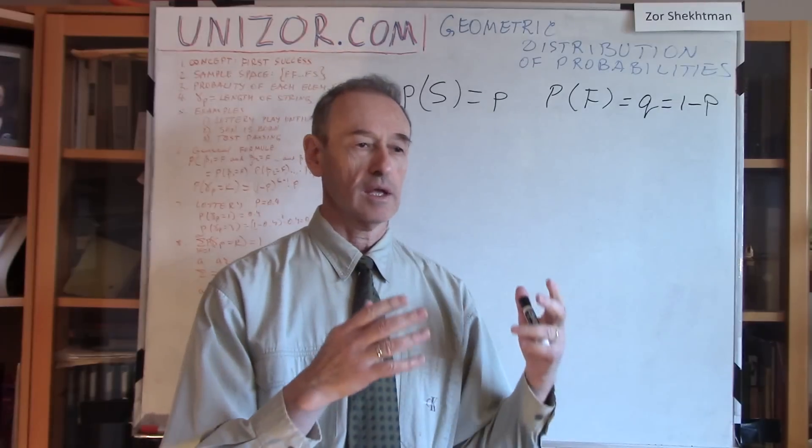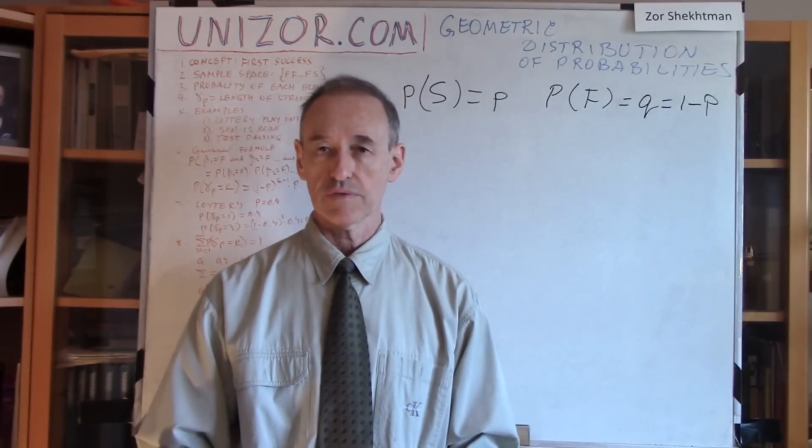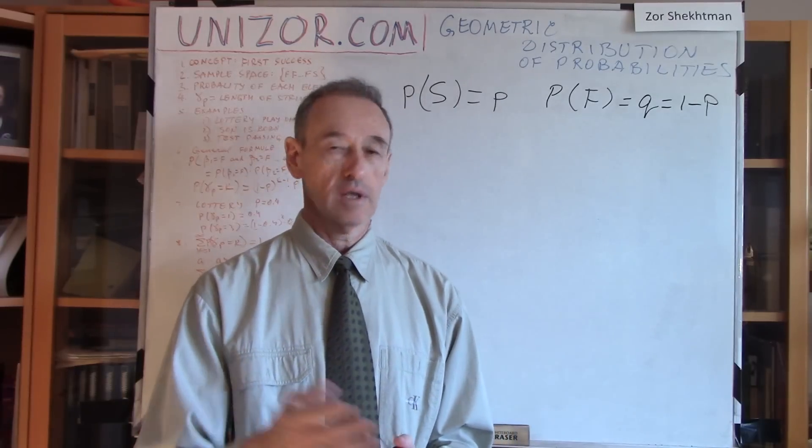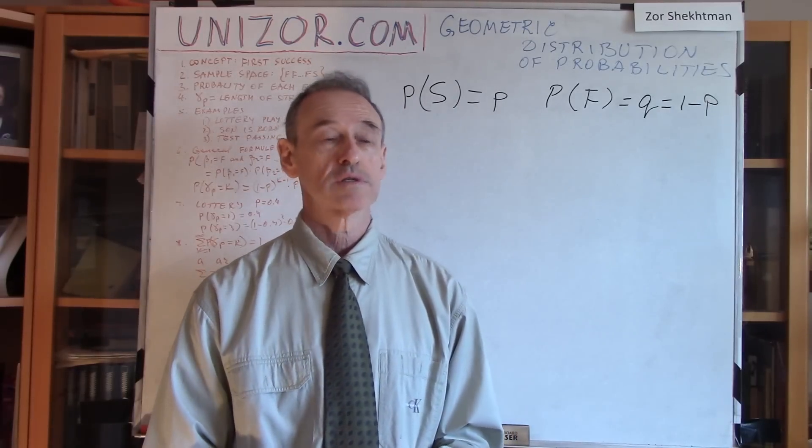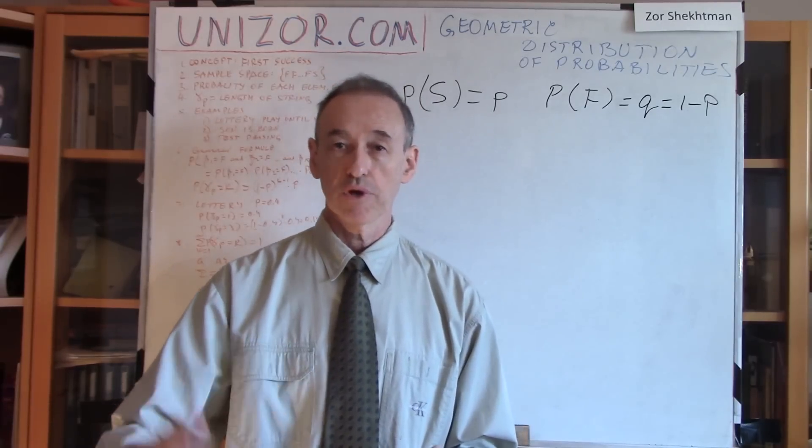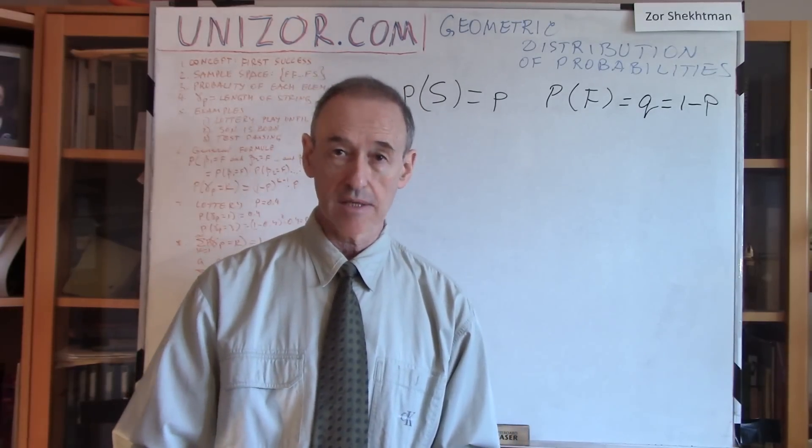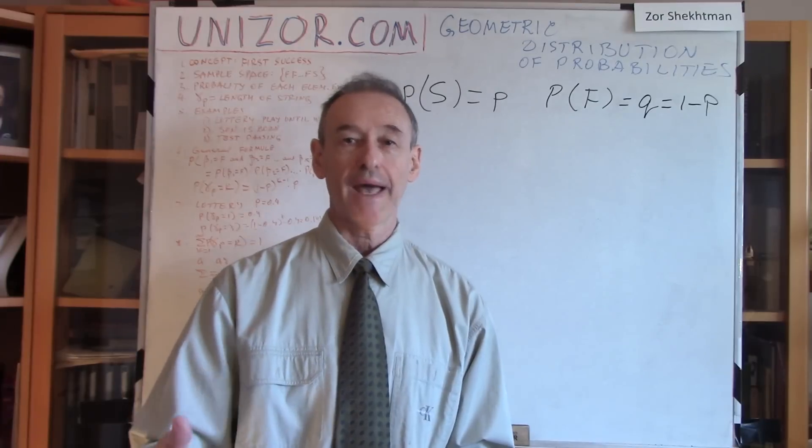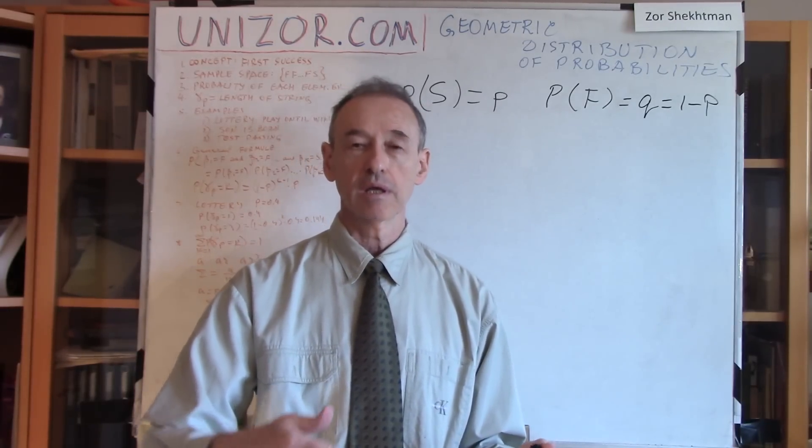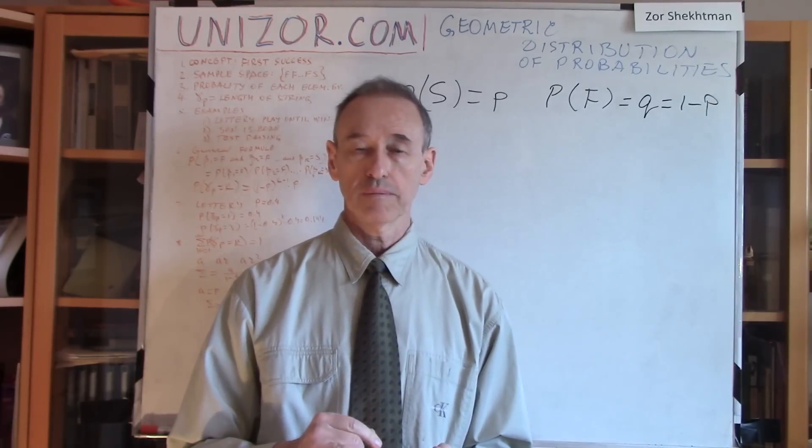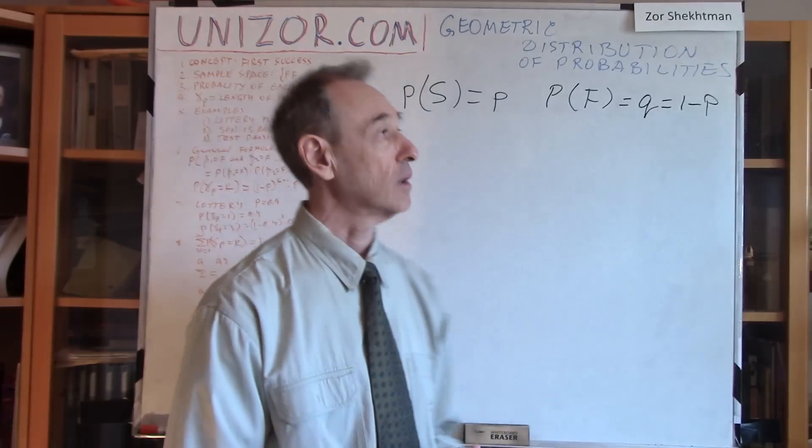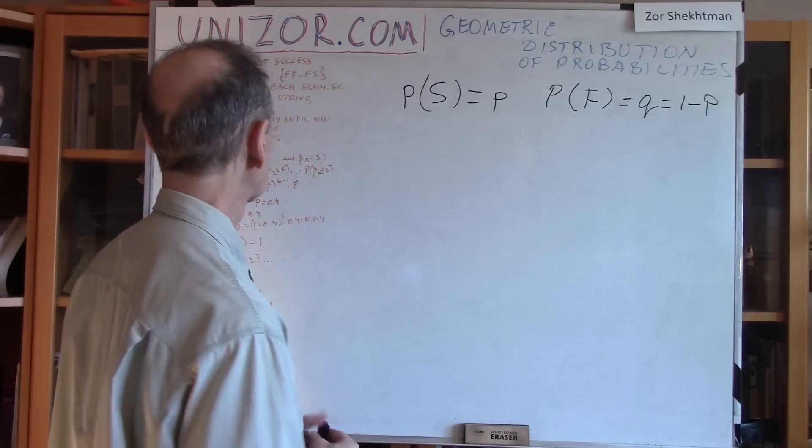Now, what if we will assume for a second that the student between the tests doesn't study anymore? So his knowledge is fixed. So certain number of questions he knows, certain number he doesn't know. Let's say it's 100 questions, and he knows like 75 of them, and 25 he doesn't know. So there is a certain probability of success, right? In this case it's three quarters. And he basically participates in this Bernoulli trials of passing the tests until the moment he passes.